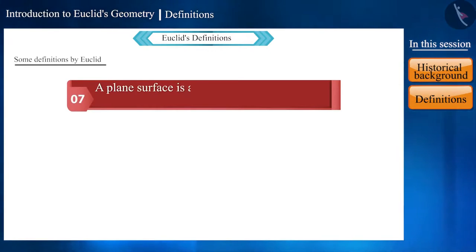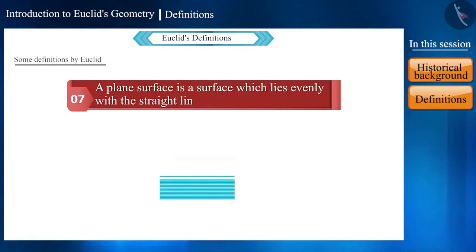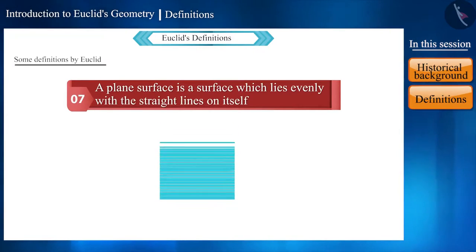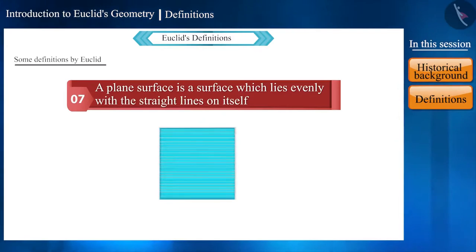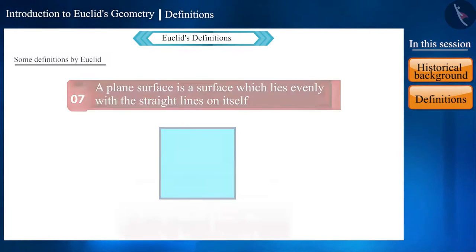And the seventh definition says that a plain surface is a surface which lies evenly with the straight lines on itself. That is, we can say that there are many lines on a surface.